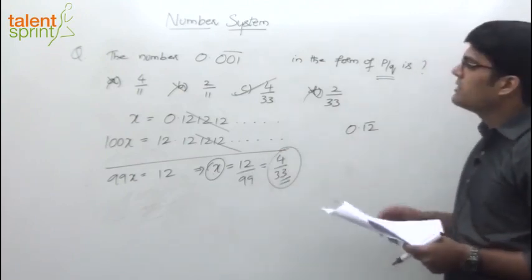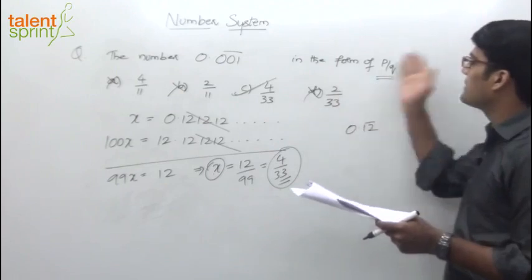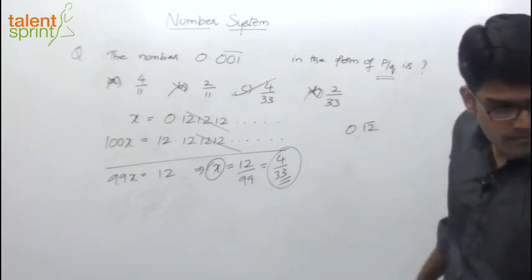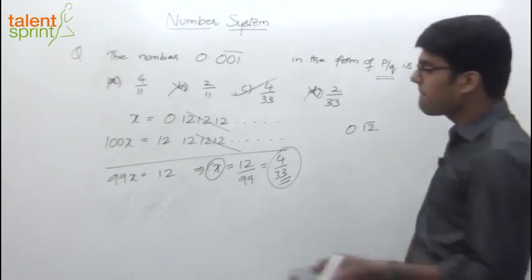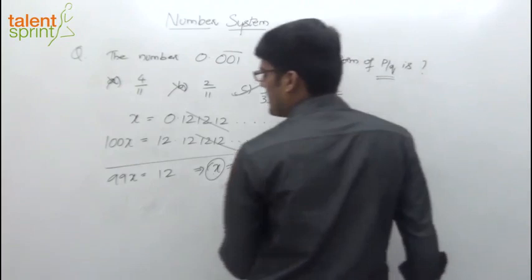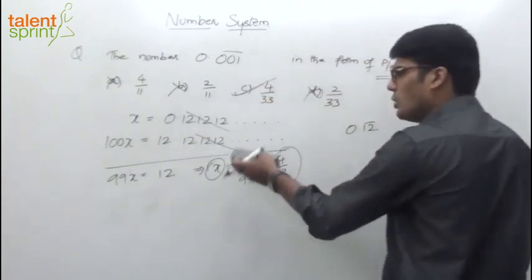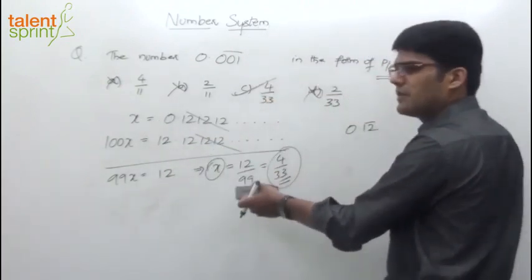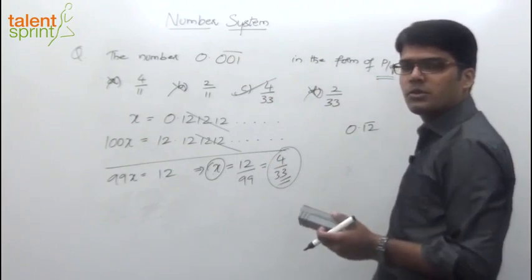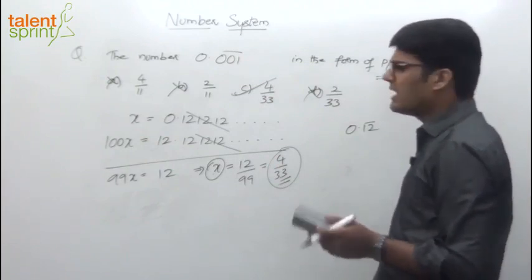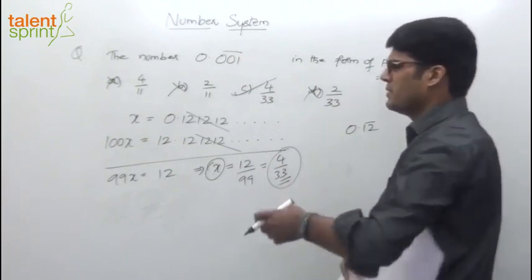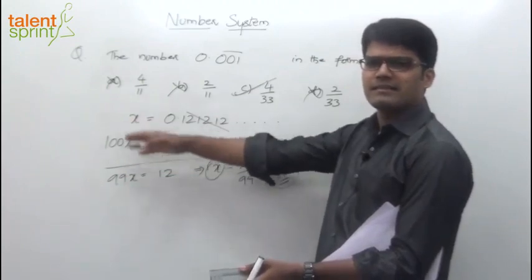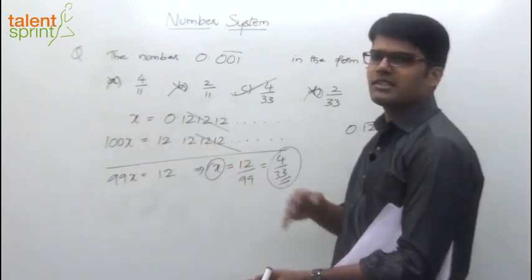So the number 0.001 bar is in the form of P by Q. This is actually simple — even though it is the regular way of solving it, it is not difficult. It would not take more than 15 seconds to do it this way. Cut down the number of steps. The repeatable part gets cancelled, so 100 minus X gives 99. Here it is 12.